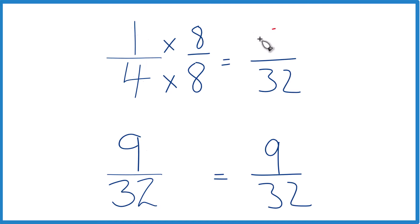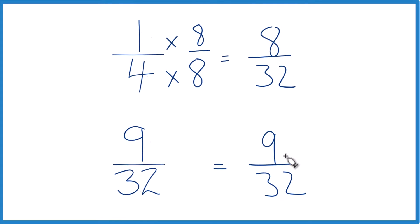1 times 8, that's 8. Now we got the same denominator, we compare the numerators, and you can see that 9, that's larger than 8, so 9 30 seconds, that's larger than 8 30 seconds. So over here, 9 30 seconds, that's larger than 1 fourth.